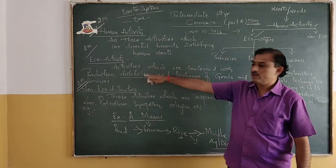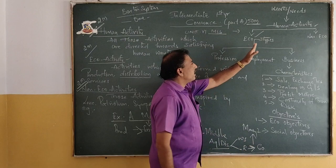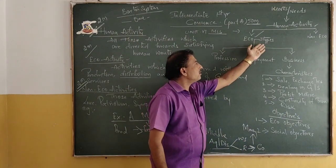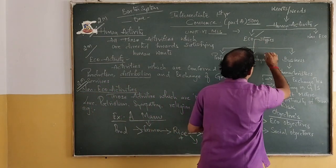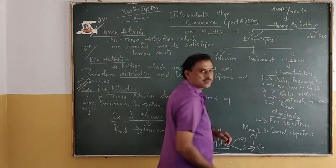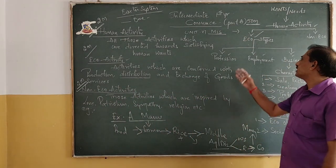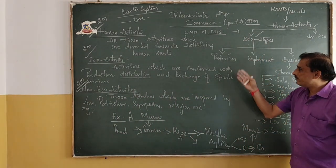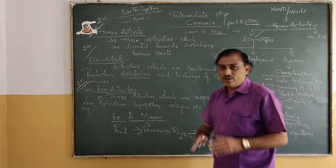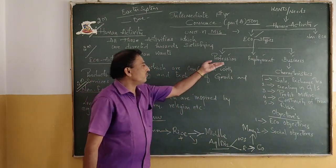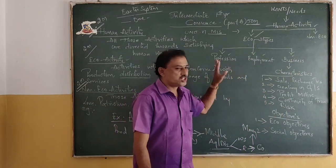So all these three definitions are very important for your two-mark answers. Next, we are going to study in detail: what are economic activities and how many types are they divided into? So we have profession, employment and business. Economic activities are further divided into three types — profession, employment and business. We will see in detail what is meant by profession, what is meant by employment, and what is meant by business.